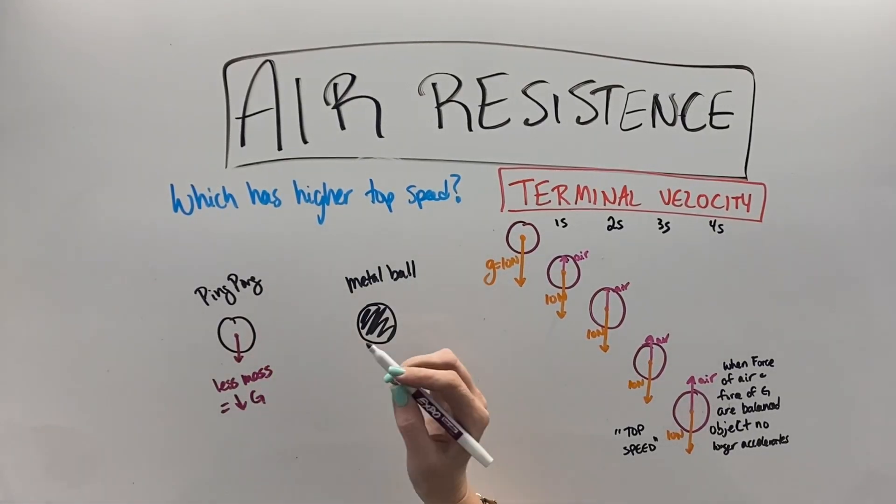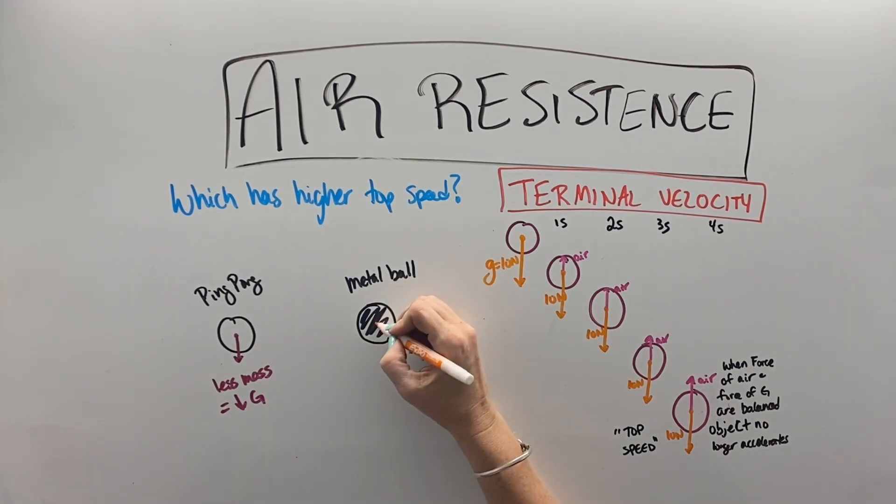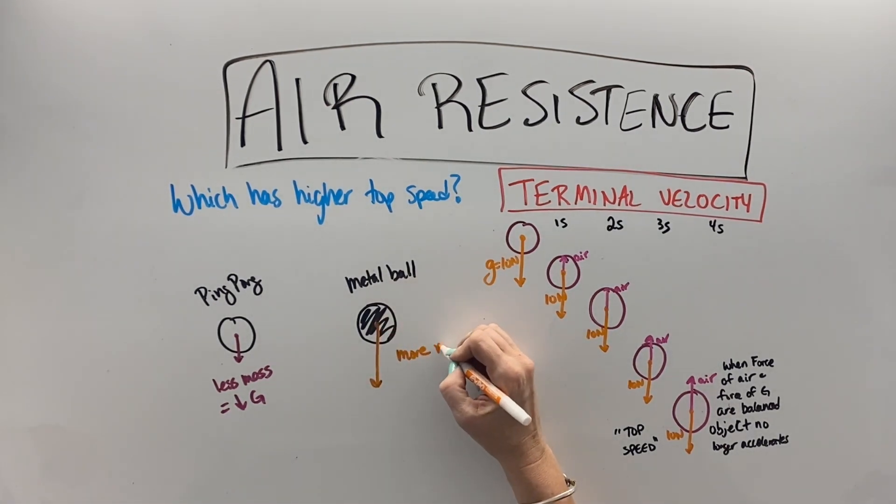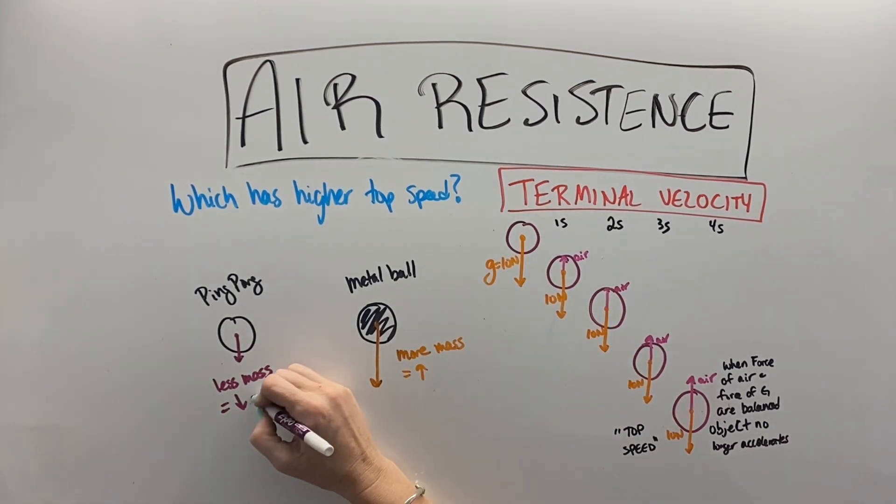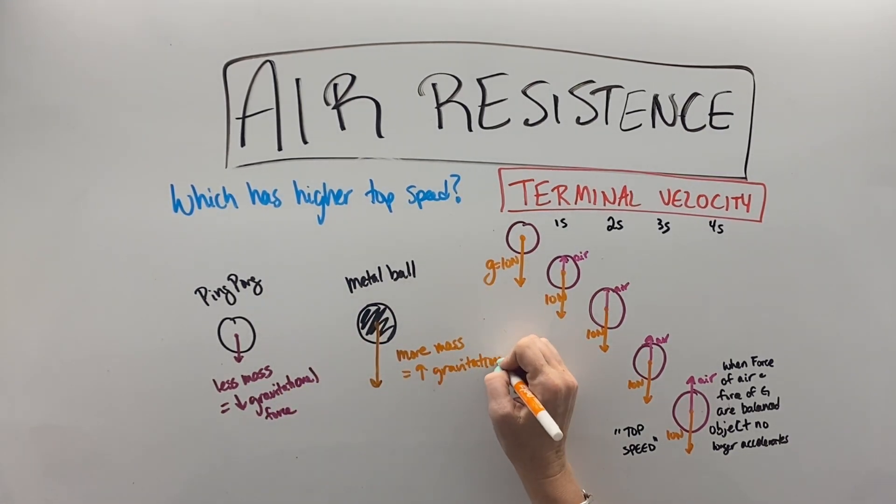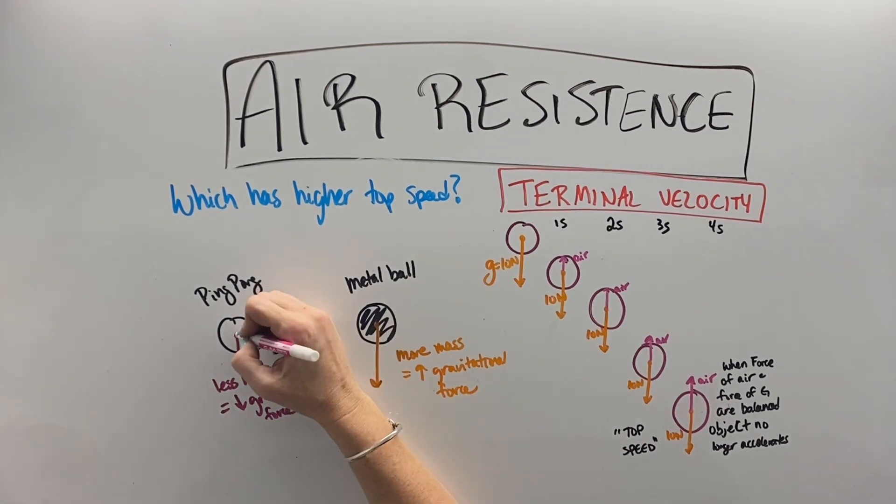And finally, if we were to drop a ping pong ball, and I actually have a wooden ball and a metal ball, the ping pong ball has a lower mass, so it has a lower gravitational force pulling on it than the metal ball with more mass and greater gravitational force, which means it's going to take longer for the force of gravity to be balanced out by air resistance for the metal ball.